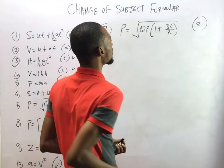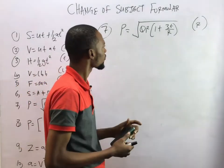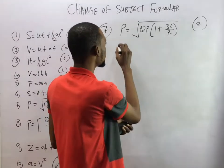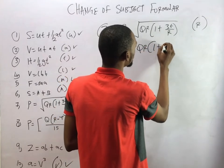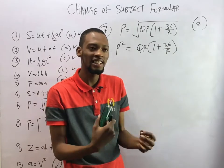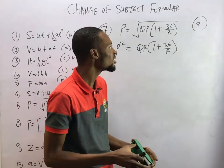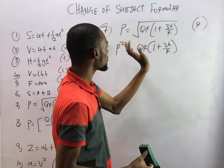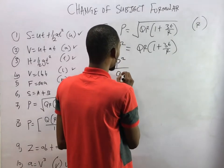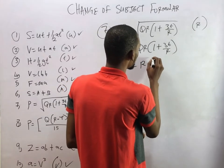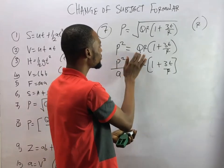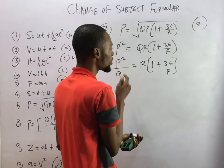For the final question, we have R in two places and need to make R the subject formula. To remove the square root, we square both sides: P squared equals Q times R times (1 plus 3T over R). Then divide both sides by Q: P squared over Q equals R times (1 plus 3T over R).